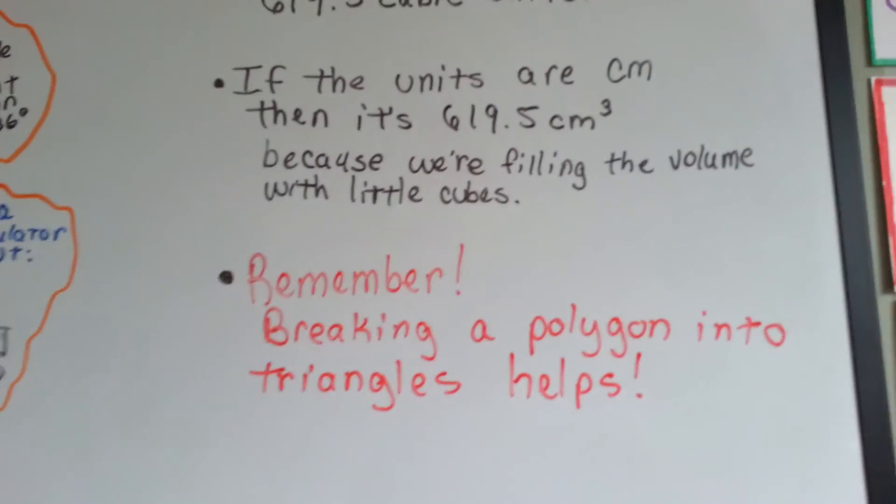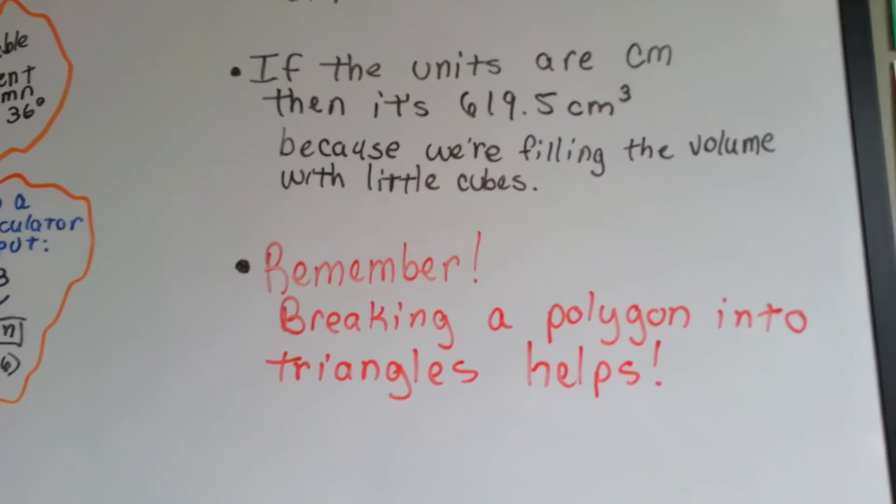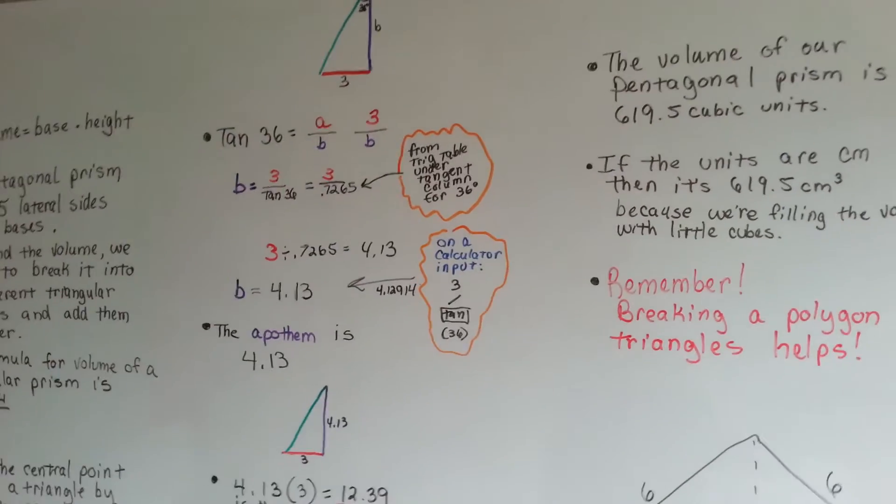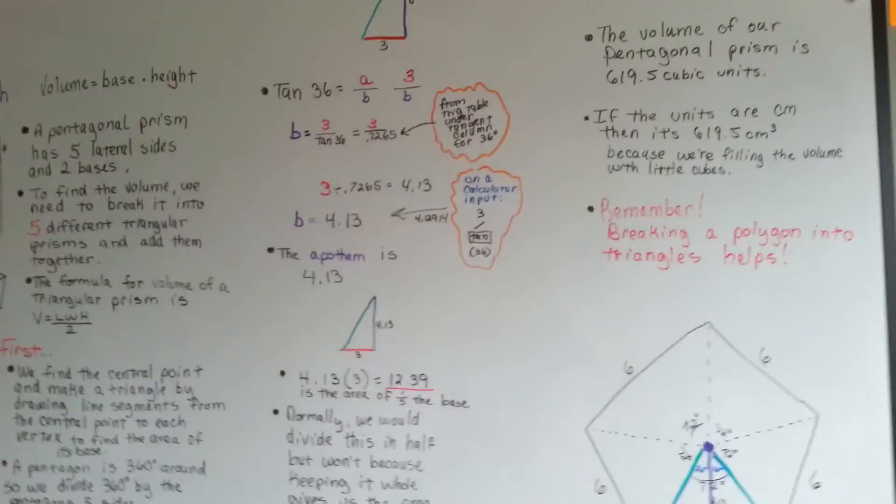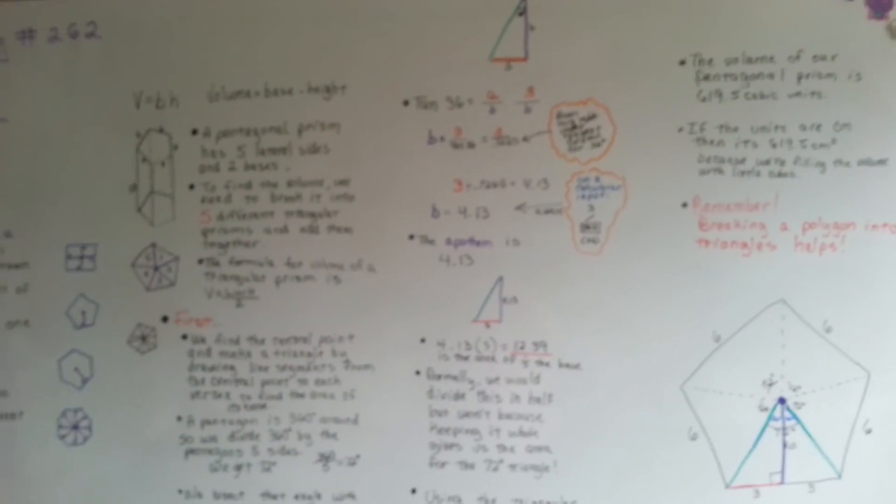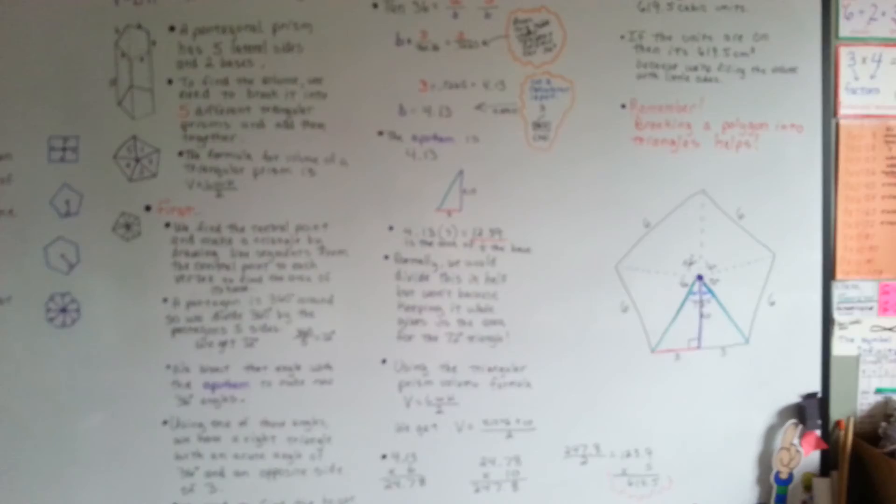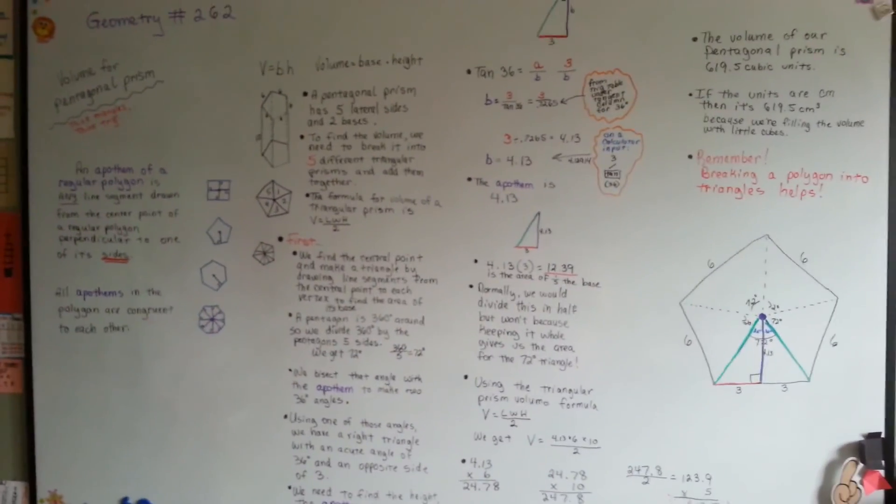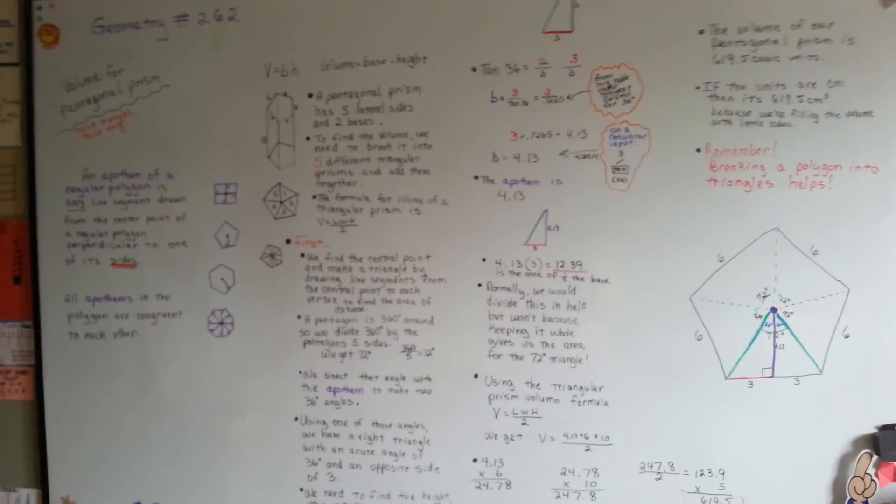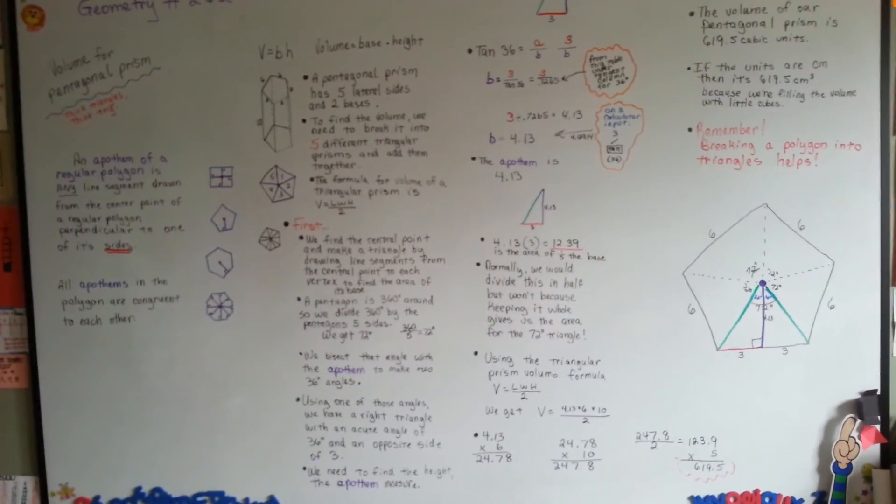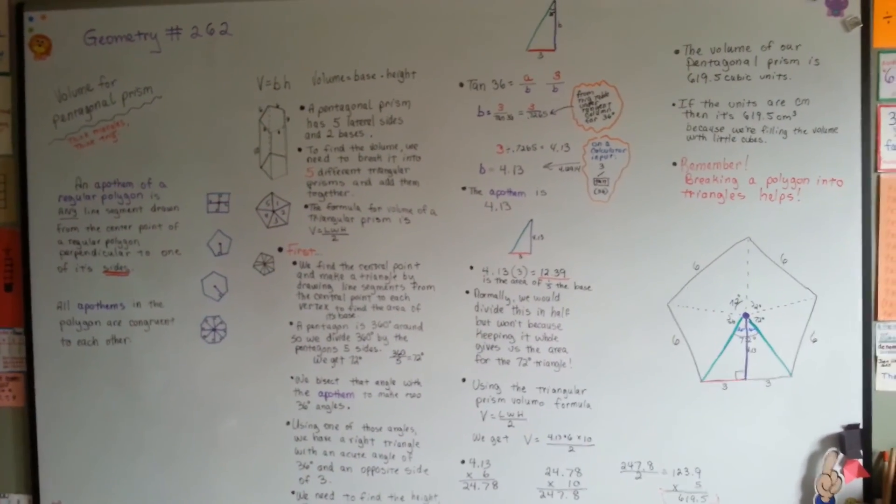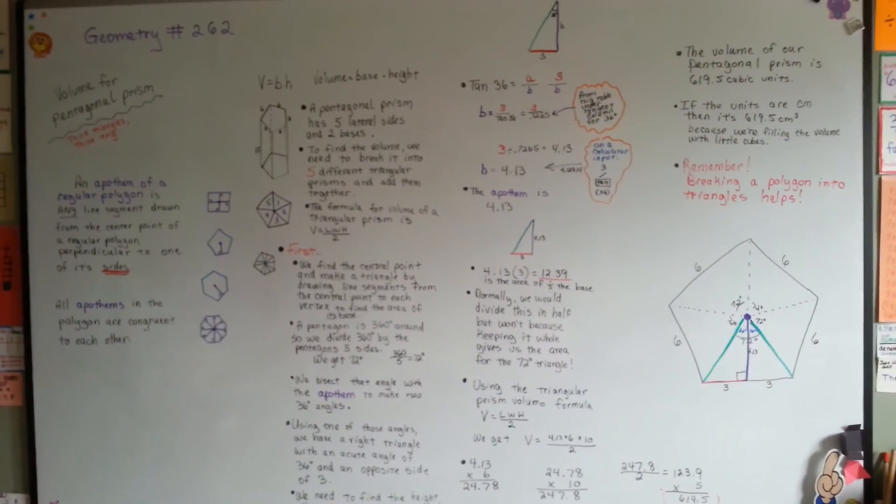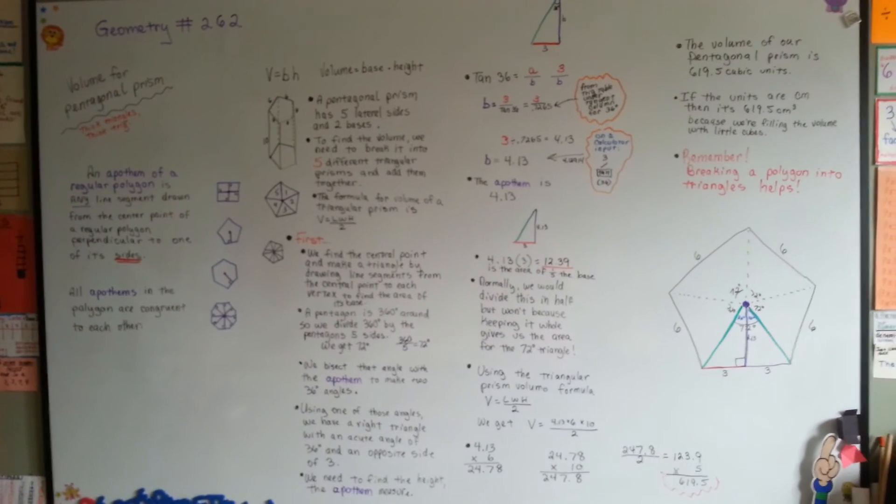Remember, breaking a polygon into triangles helps. You don't necessarily have to have a scientific calculator. You just have to look up a trig table. I know this is a lot to take in. What it is is, it's not that it's hard to do, it's just long. It's almost something like you're doing something that's not really that difficult. It's just very long to do. But, you can do it. It can be done.